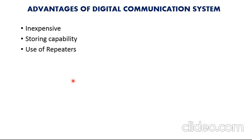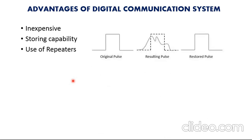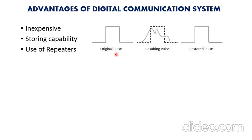Number three: use of repeaters. When you send a signal over a longer distance, signal quality will degrade as it travels. But by using repeaters, we can regenerate that signal without any loss. This is the original pulse or original signal, and as it passes over a longer distance, the signal property degrades. But if you use repeaters, you will again get the digital signal without any loss of data.